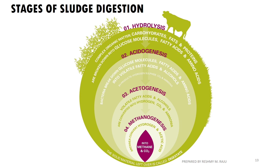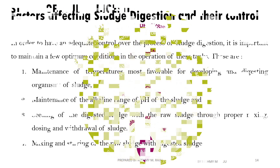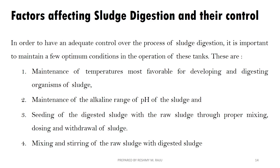This figure shows the stages of sludge digestion — hydrolysis and solubilization processes. This is a very important topic. The factors of sludge digestion include: maintenance of temperature most favourable for developing organisms, maintenance of alkaline range of pH, and seeding of digested sludge with raw sludge through proper mixing, tossing, and withdrawal. Mixing and stirring of raw sludge with digested sludge are also key factors.